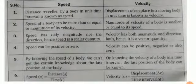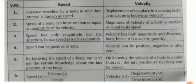Sixth point: speed v is equal to distance s upon time t. But in velocity, v is equal to displacement delta x upon time interval delta t. Thank you.